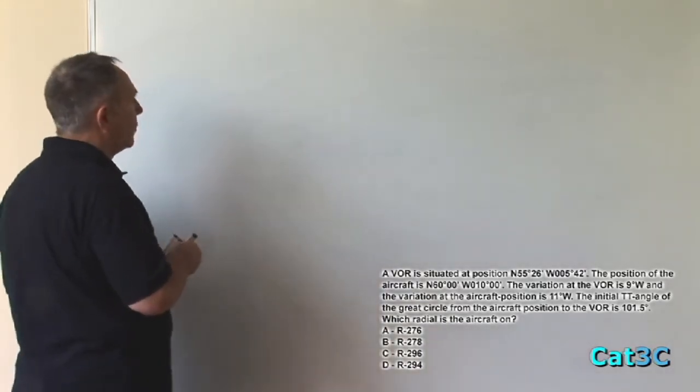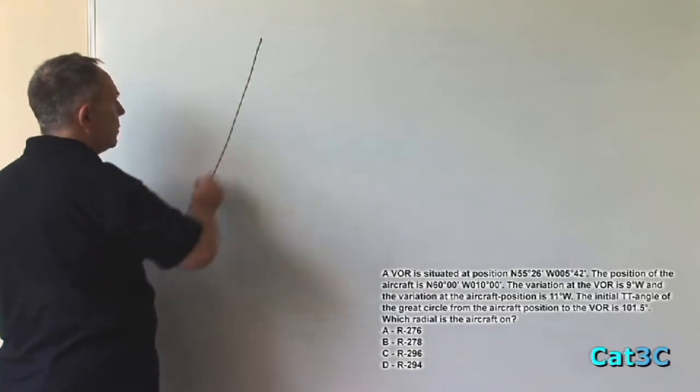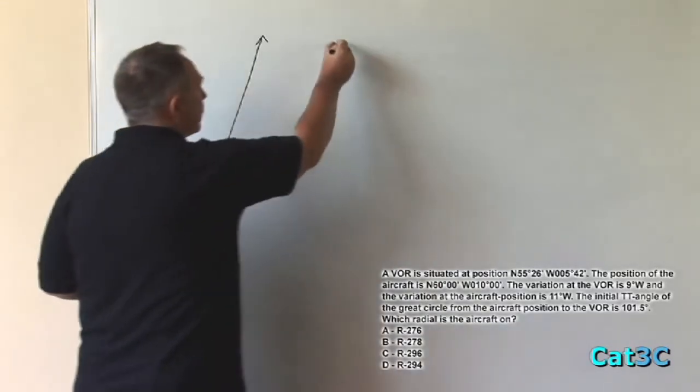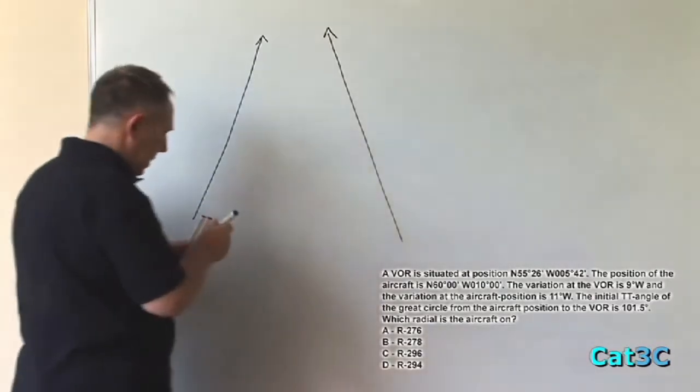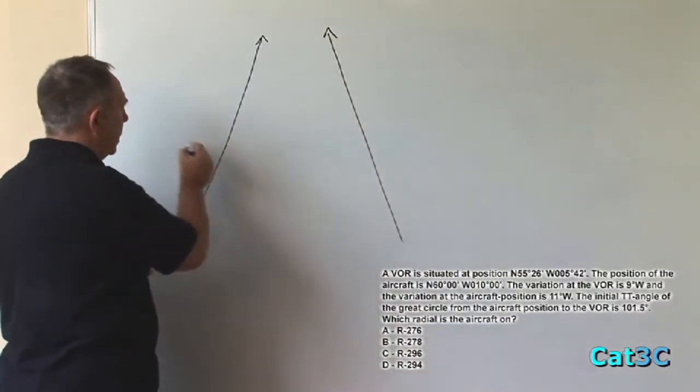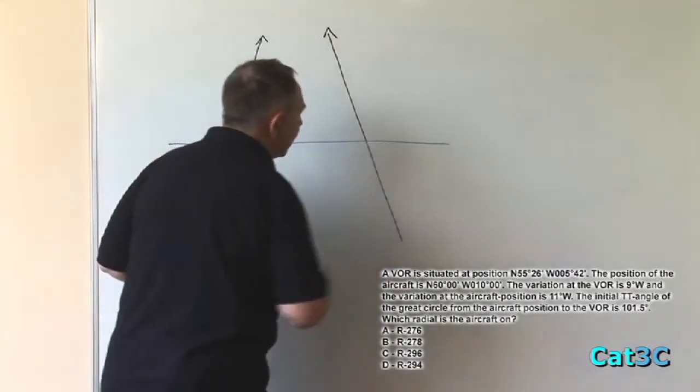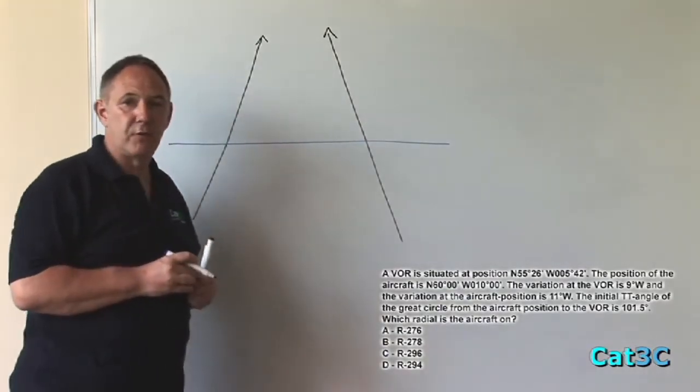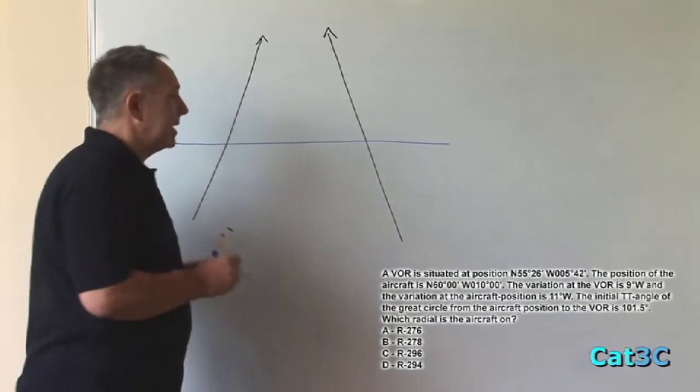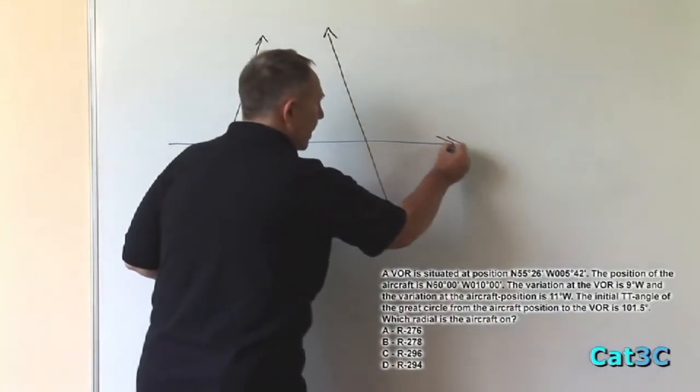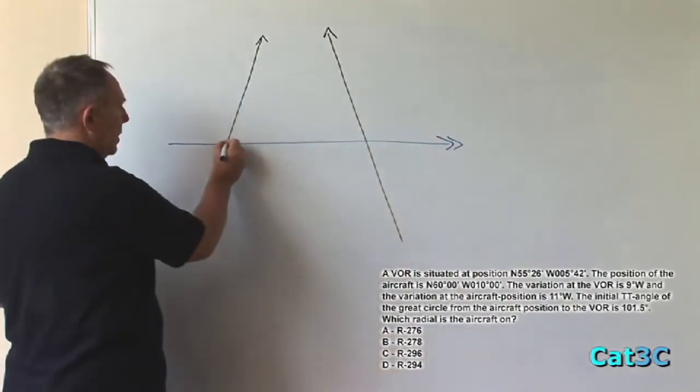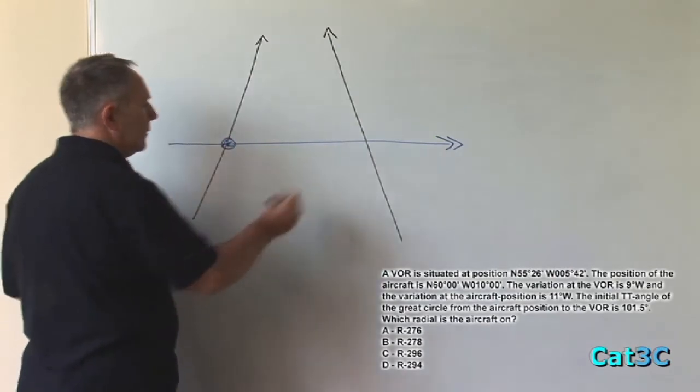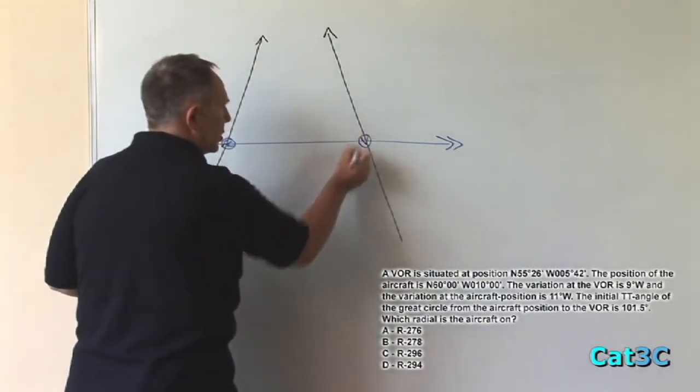So we start with 2 meridians in the northern hemisphere, like so, and a simple track line across the two radials. Now we know the bearing from the aircraft of the VOR is 101.5 degrees. That's an easterly track. So the track must be going left to right. This must be the position of the aircraft and this must be the position of the VOR.